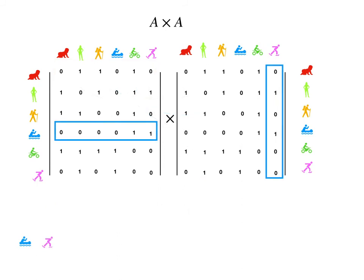Let's look at another dot product. This time we take the fourth row and the sixth column. The fourth row represents the relationships between the dad's friend and the rest of the people, and the sixth column represents the mom's co-worker's relationships. In fact, they are cousins — directly related. But do they have any friends in common? After doing the product, we found out that no, they share no friends in common.